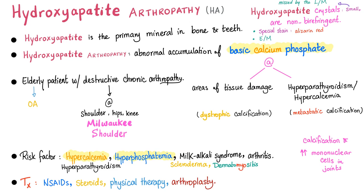Hydroxyapatite is the primary mineral in bone and teeth — that is normal. However, hydroxyapatite arthropathy is abnormal accumulation of basic calcium phosphate at areas of tissue damage and necrosis. This is dystrophic calcification. If the patient also has hyperparathyroidism or hypercalcemia, this becomes metastatic calcification. You can have both in the same patient, which makes a great pathology question.